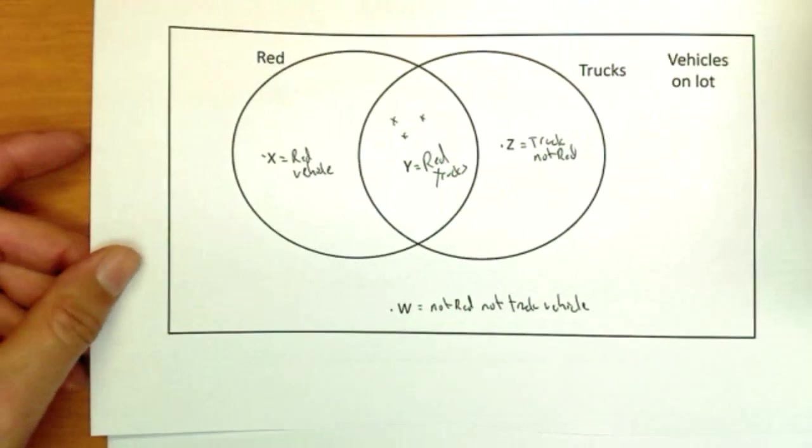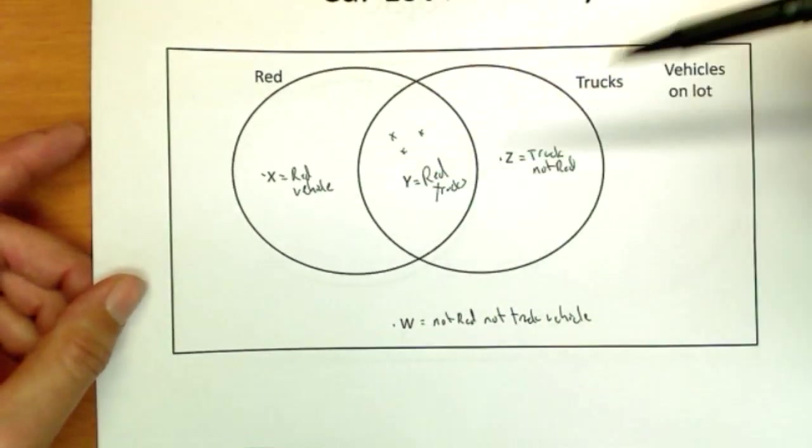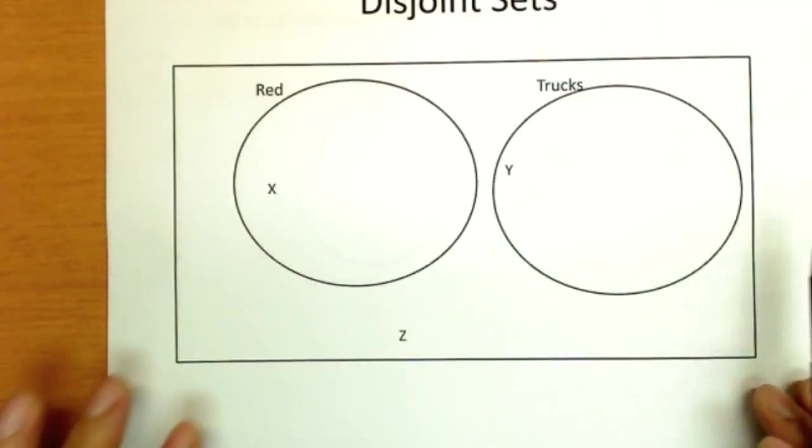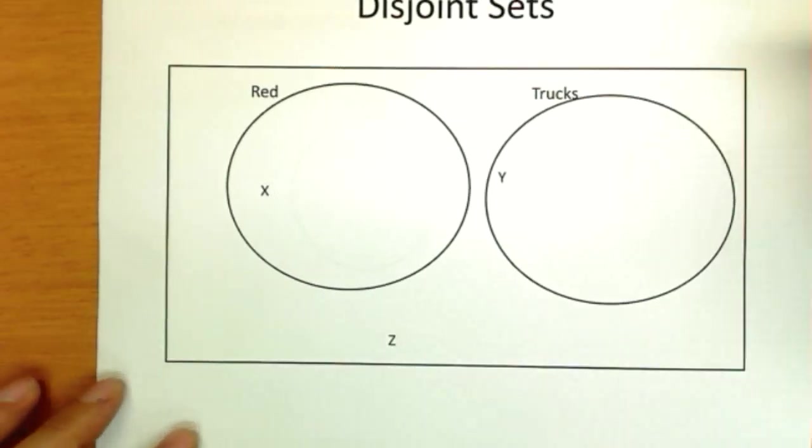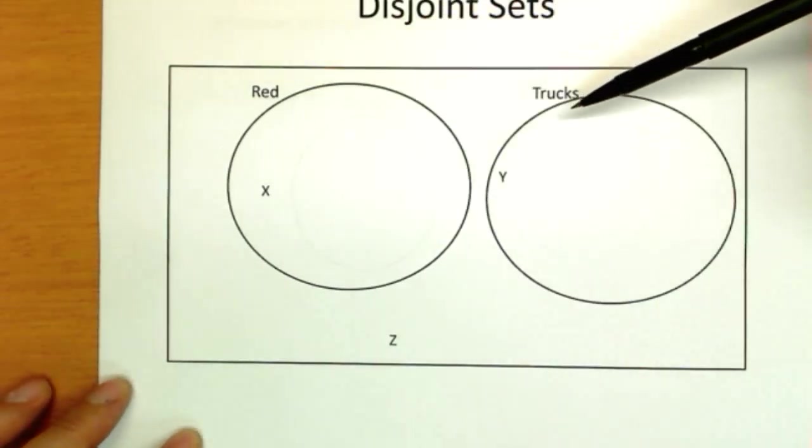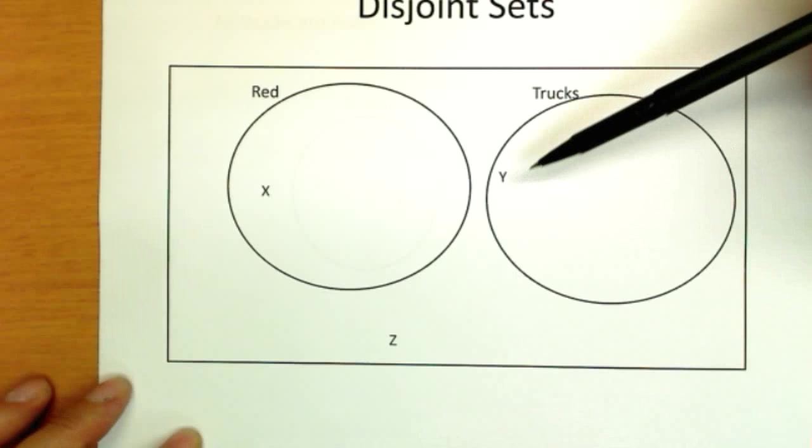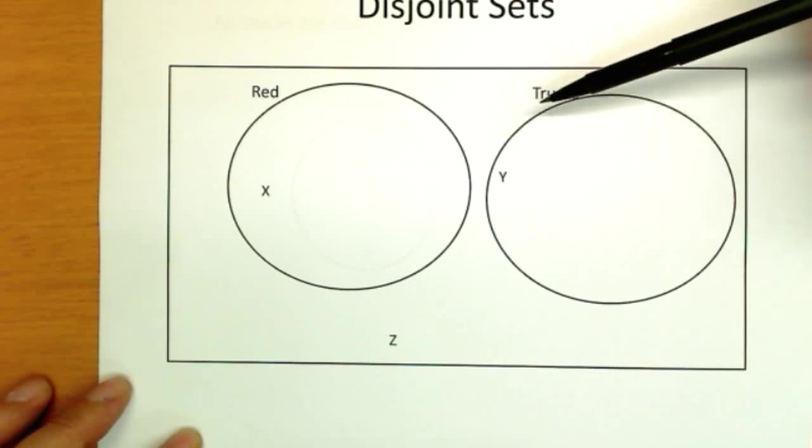Okay, now this is one possible arrangement. In this one, we would draw a picture like this if we knew there's an intersection. This one, however, while it's still the same type of things, it's still vehicles on the lot, although I didn't label that here. This time, the red and truck circles have a difference. They don't intersect. So what this is telling you is there are no red trucks.